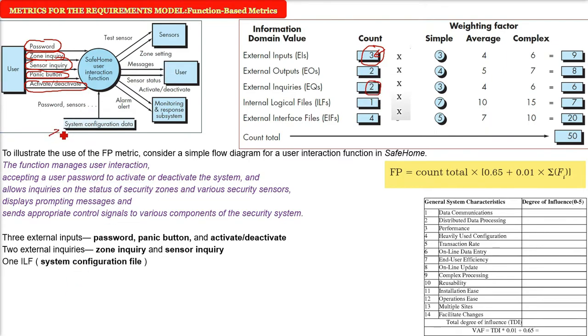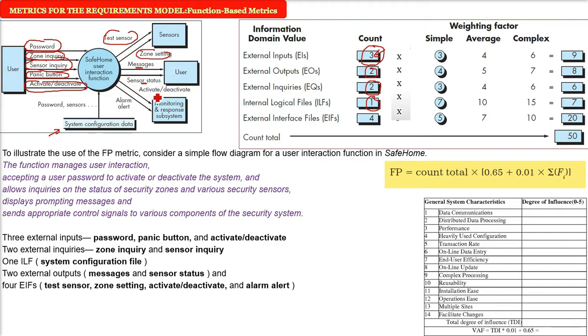Then ILF. How many ILFs are there? System configuration file. So we have one ILF. Two external outputs are there. These are messages which are going outside and sensor status. So these are two external outputs being given. So we will put external outputs as two. Now what are EIFs, the external interface files? For example, your test sensor, zone setting, activate, deactivate whether it is done or not, what is the test status and the alarm alert. These are external interface files. So we will put four here.